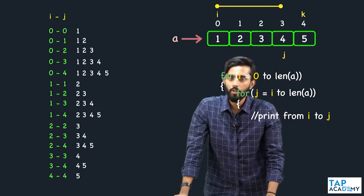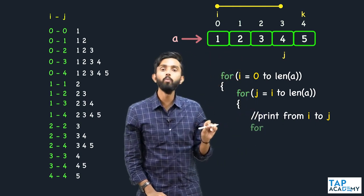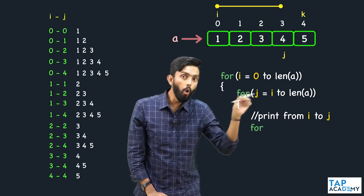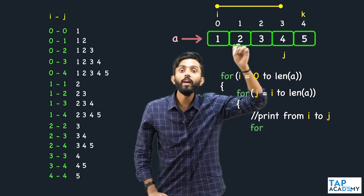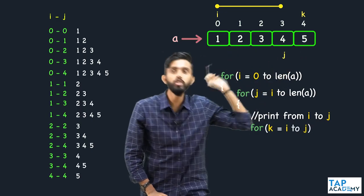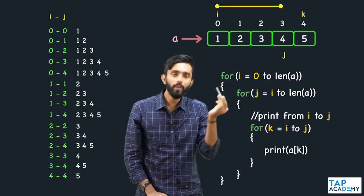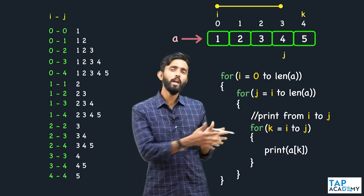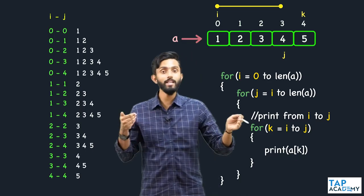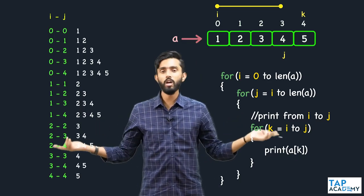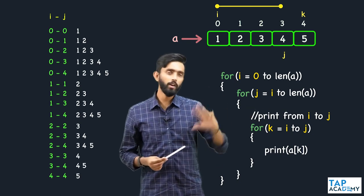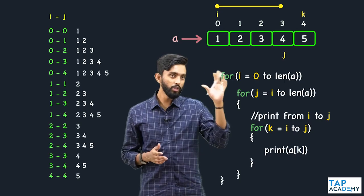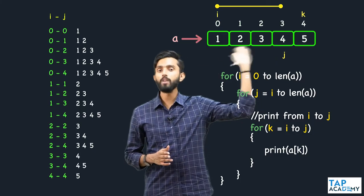To write the code: one more for loop where k starts from i and goes not till the end of the array but only till j. Inside that, print the element a[k]. In Python, this can be easily done using slicing, but in Java we don't have slicing, so we use the k loop. This is the core logic of printing all the sub arrays of an array.